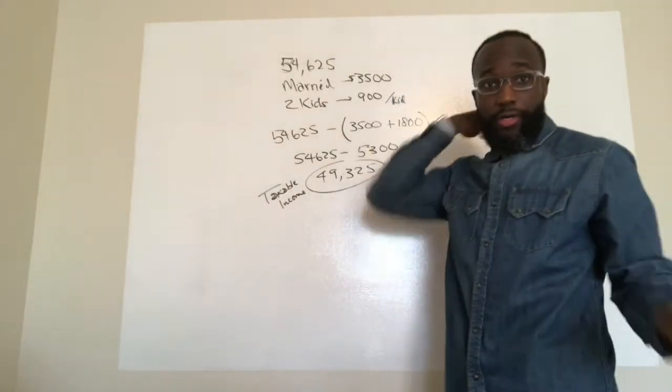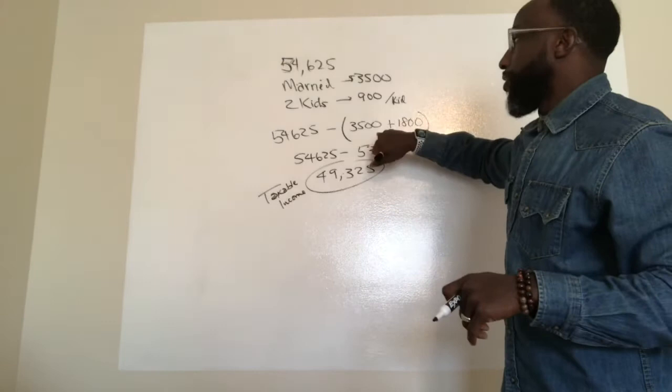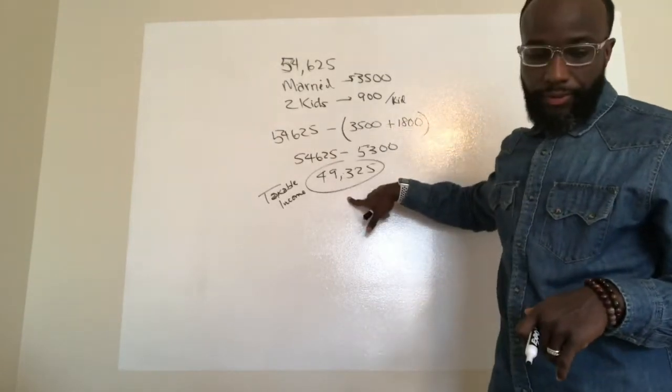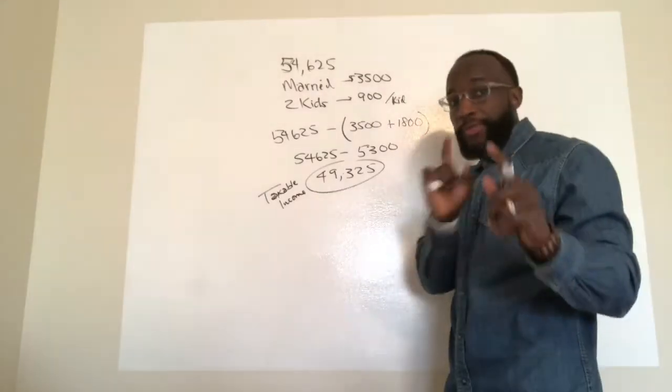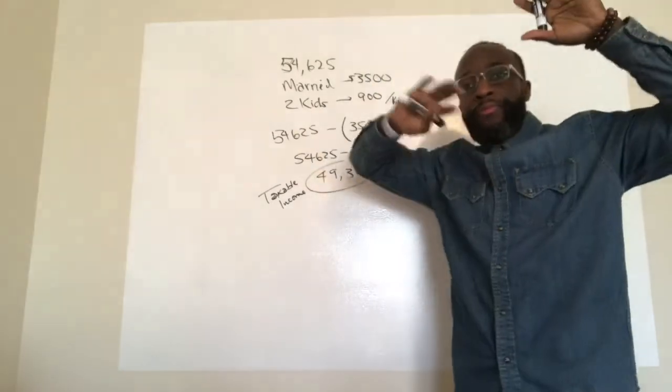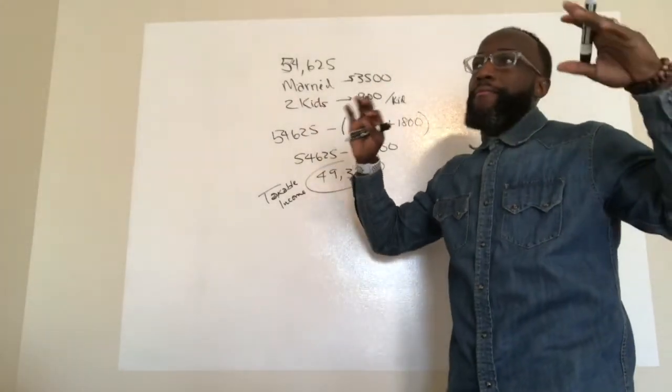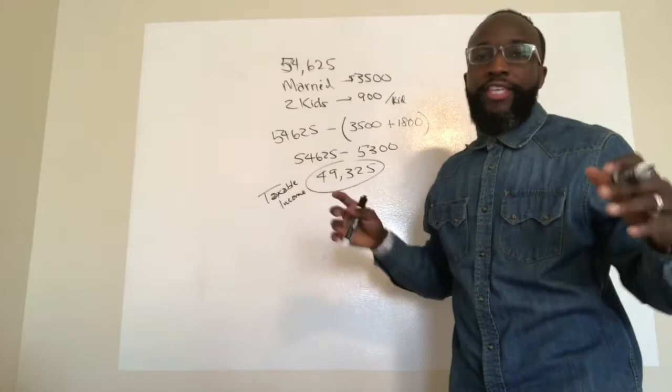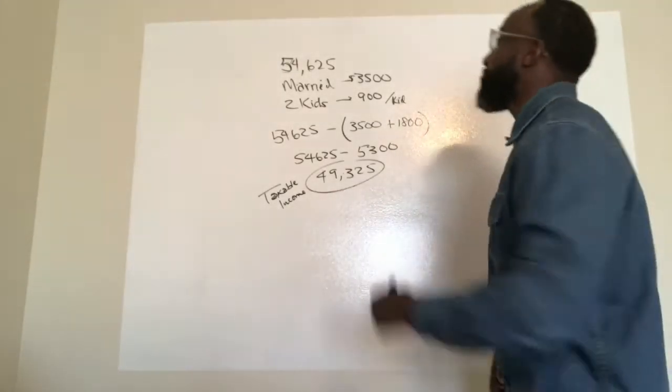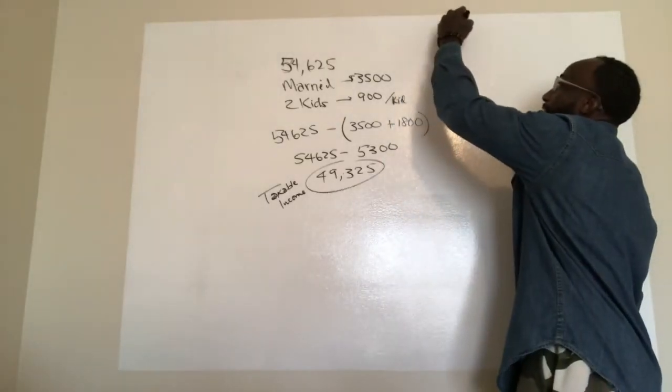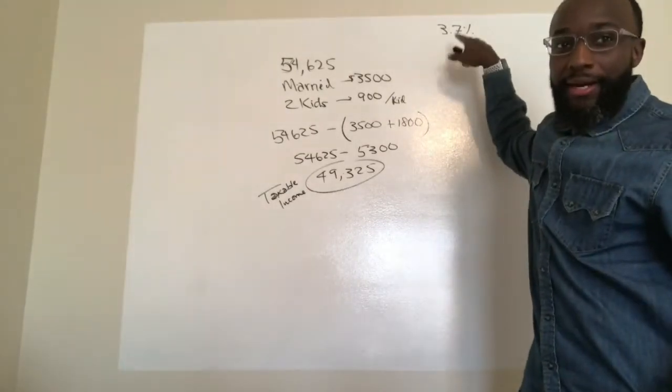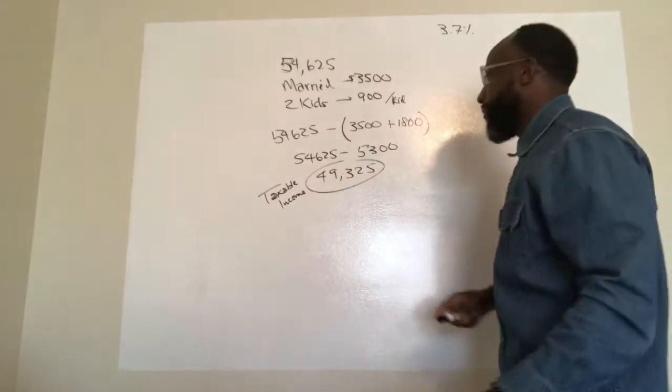We good so far? All good. So these are exemptions, we deducted it. Taxable amount. Now in this particular state, for this example, we'll call this Mathanoise. In the state of Mathanoise, the state tax rate is 3.7%. So it's 3.7% in Mathanoise.